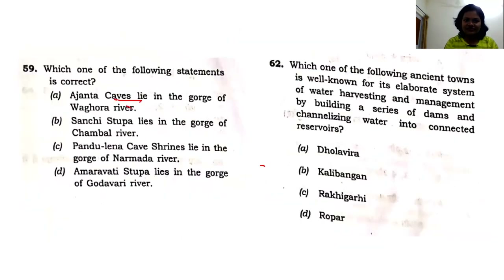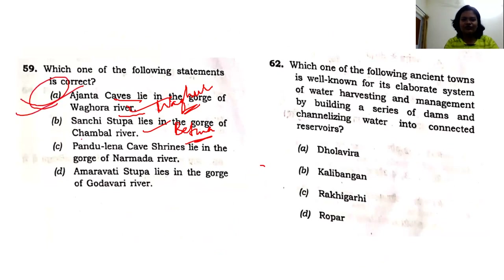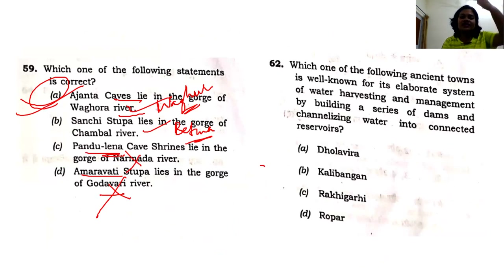The next question is about the Ajanta Caves and associated rivers. The correct river is the Waghur River, not Waghura. Sanchi Stupa is drained to the south by the Betwa River, not the Chambal. Amaravati is on the Krishna River, not the Godavari. And the cave in the Nasik area is not on the Narmada — Narmada doesn't flow into that area. So eliminating all wrong pairings, the answer is option A.